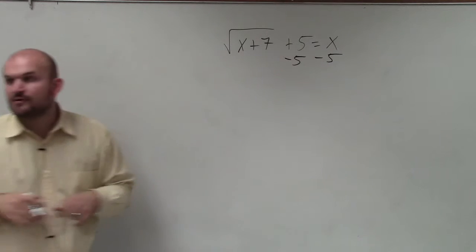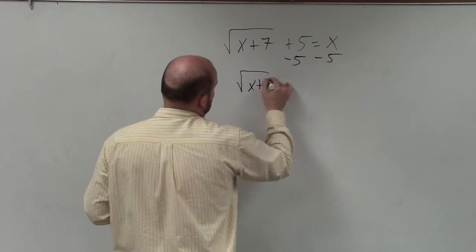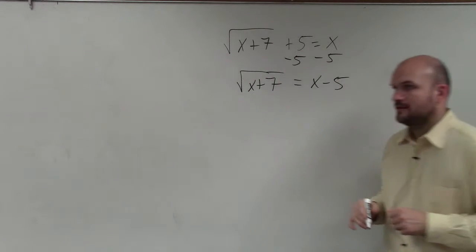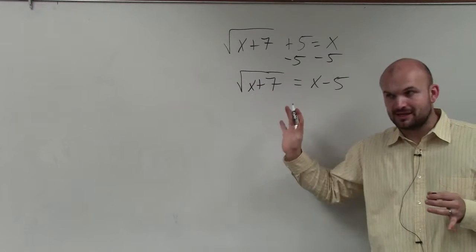So we're going to do that by subtracting 5 on both sides. Now I have the square root of x plus 7 is equal to x minus 5. So when you're subtracting 5 from x, you're going to have x minus 5. Now I have my square root isolated.